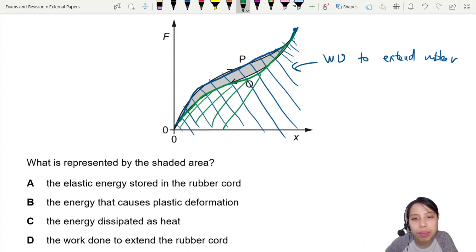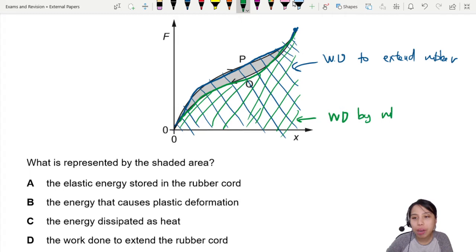The area under this curve is another type of area. Let's shade this green one. This green area here is, in simple terms, the energy that you got back. In proper terms, work done by the rubber, or the energy that you got back.